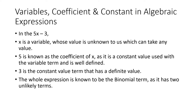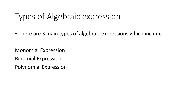So this whole expression has two terms: 5x is one term and 3 is another term. This is an algebraic expression with variables, coefficient, and constant — here we have one variable, one coefficient, and one constant. Now, though you are clear about coefficient, constant, and variable, you have to understand that there are different types of algebraic expressions: monomial expression, binomial expression, and polynomial expression.